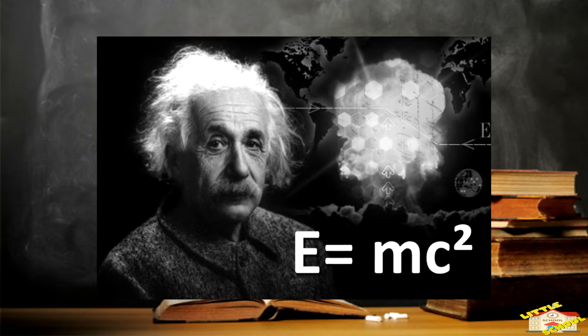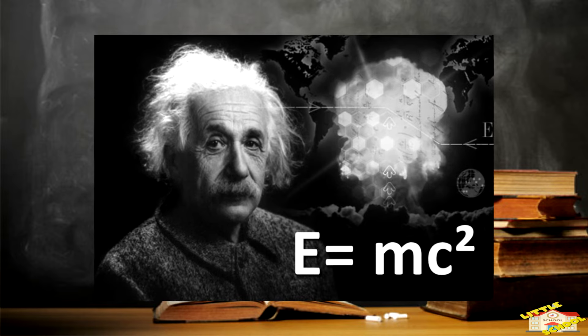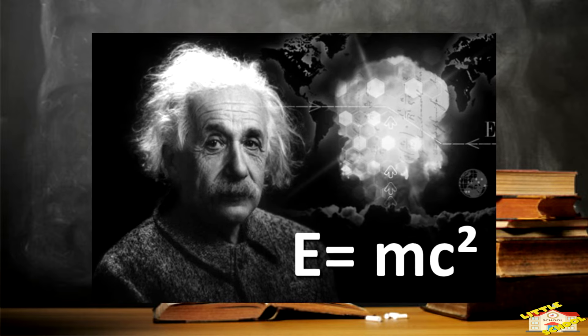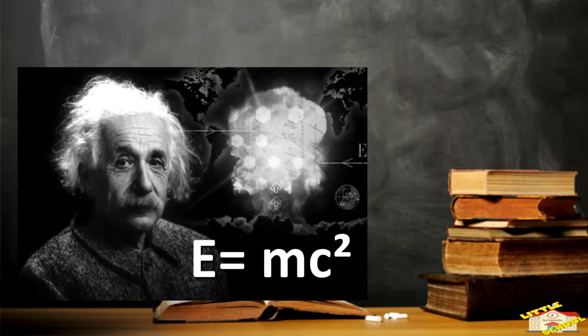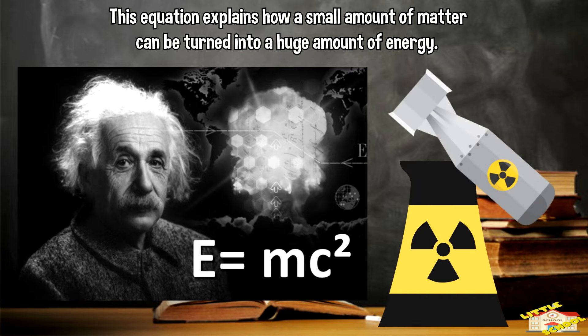Einstein's most famous equation, E equals MC squared, also came from this theory of special relativity. This equation explains how a small amount of matter can be turned into a huge amount of energy, which is the basis for things like nuclear power and even atomic bombs.